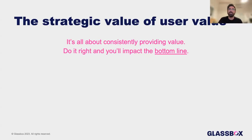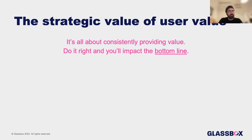Let's talk about the strategic value of user value. The way I see it, it's all about consistently providing value. Consistency is really important because products have become subscription-based and users can walk away whenever they want — their cost of switching is fairly low. So if you do deliver user value and you do it consistently, you will be able to impact the bottom line. I'm going to present three specific business KPIs. To some of you, it may seem they aren't directly product-related — but I think product plays a very significant part to drive those KPIs, especially in product-led and B2C companies.